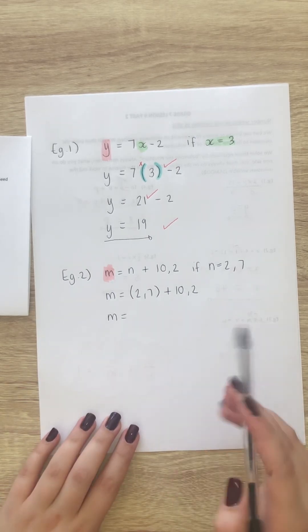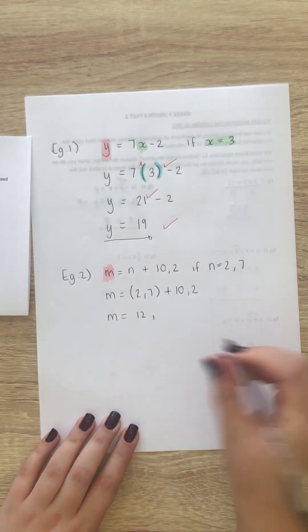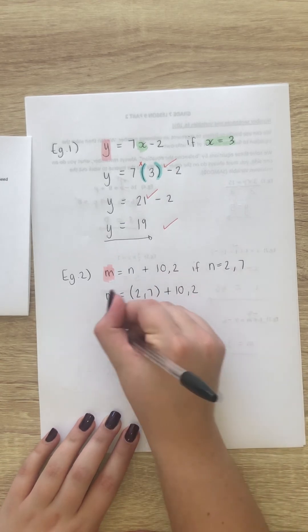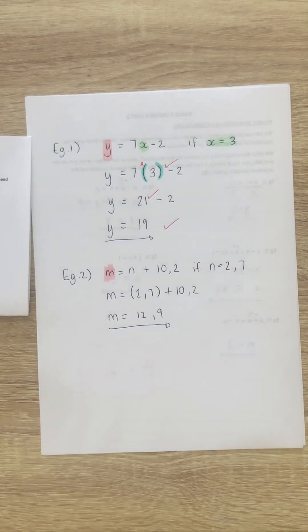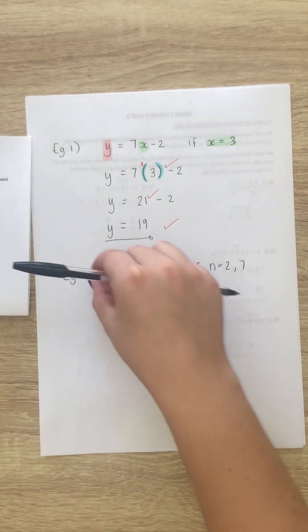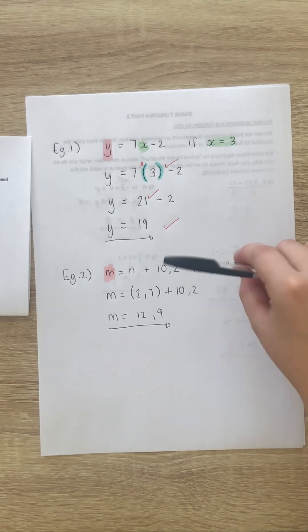So, 2 plus 10 is 12. 7 plus 2 is 9. So, here your final answer is 12 comma 9. Once again, I'm going to go through the steps. Step 1. You write your equation if and whatever is given.